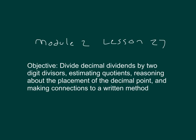The objective is to divide decimal dividends by two-digit divisors, estimating quotients, reasoning about the placement of the decimal point, and making connections to a written method.